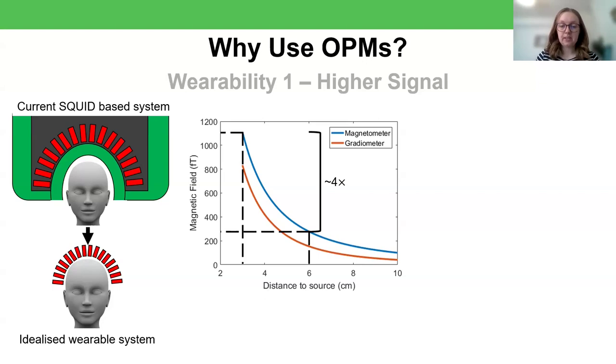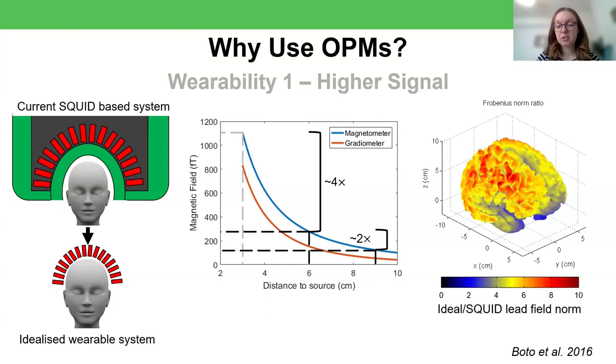What you might notice is that because this relationship isn't linear, the increase in signal that you get is dependent on the position of the source within the brain. So if I take a source that's about nine centimeters from the squid sensors and then move the sensors directly onto the scalp, losing that three centimeters again takes a standard of six centimeters. But the increase in signal now is only about two times. So what you'll find is that how much signal you gain depends on where you're looking in the brain. You'll see the biggest increases for the most superficial sources and the smallest increases, still an increase but a smaller one, for deeper sources within the brain.